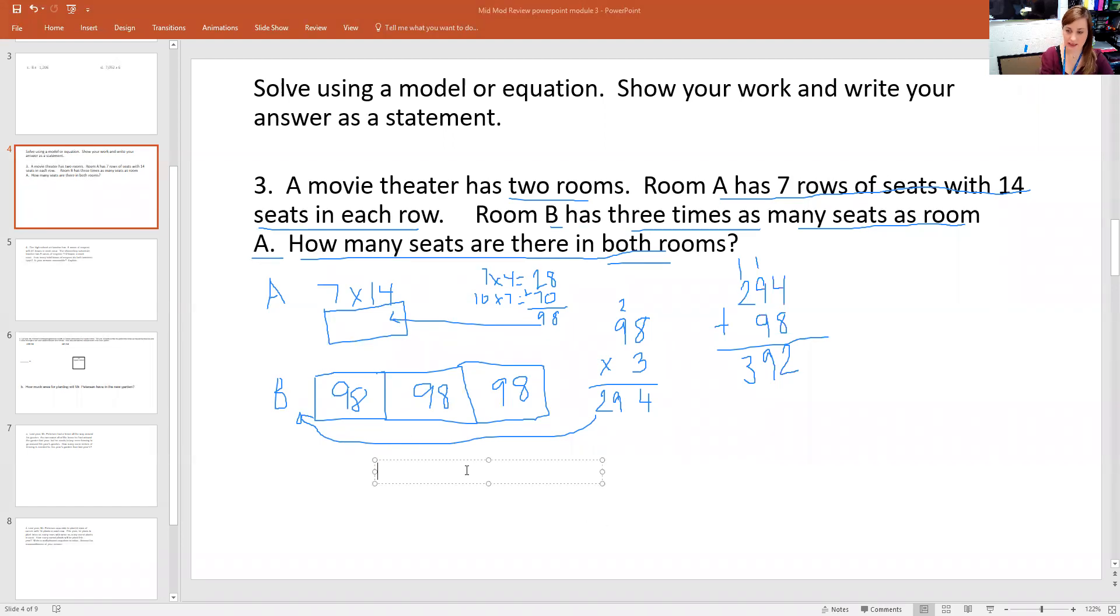I need to write it as a statement. So I'm just going to use my question. How many seats are there in both rooms? Room A and B have a total of 392. Okay, let's look at the next one.